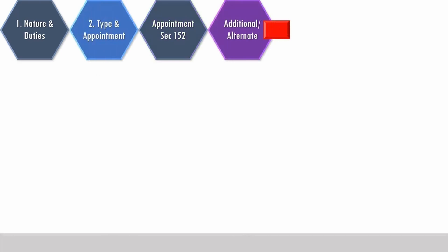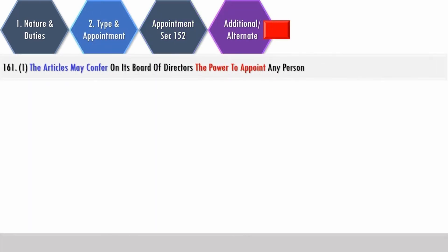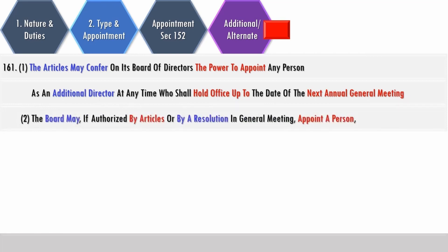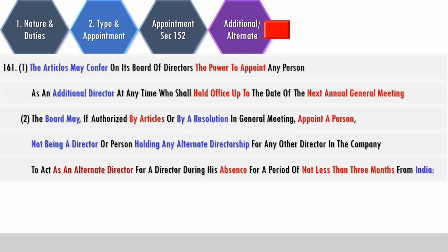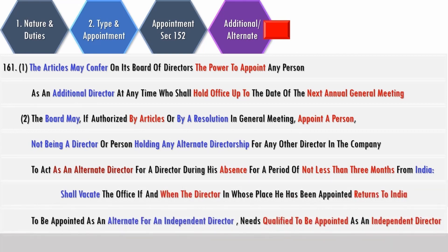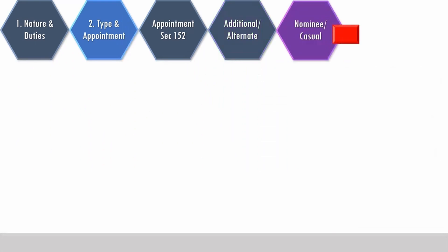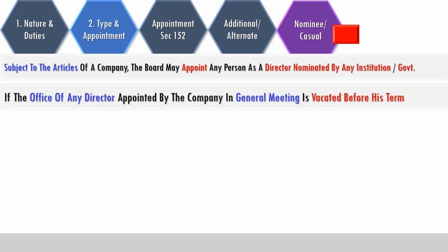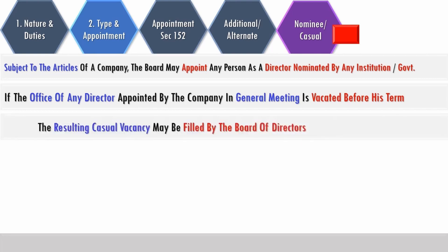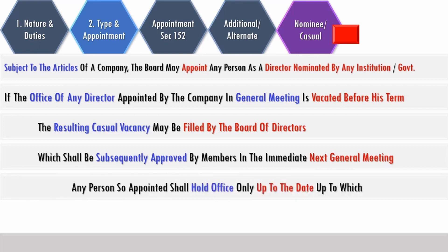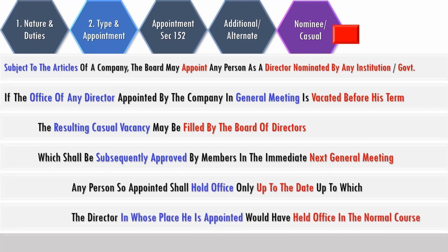The board has the power to appoint an additional director if empowered by articles, and the additional director shall hold office up to the next annual general meeting. The board can also appoint an alternate director if authorized by articles or by a resolution of a general meeting; such alternate director shall act for a director during their absence for a period of not less than three months from India and shall vacate when the director returns. To be appointed as an alternate for an independent director, one must possess the qualifications of an independent director. The board is also authorized to appoint a nominee director from any institution or government. If the office of any director appointed in a general meeting is vacated before their term, such a casual vacancy can be filled by the board of directors, subject to subsequent approval by members in a general meeting; any person so appointed shall hold office only up to the residual term of the director in whose place they are appointed.